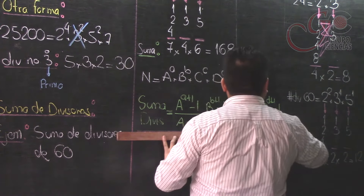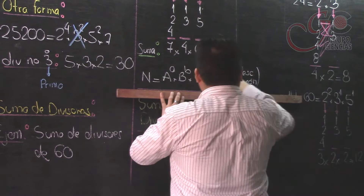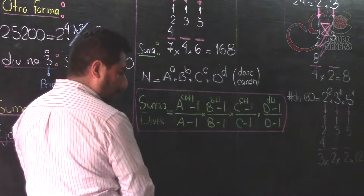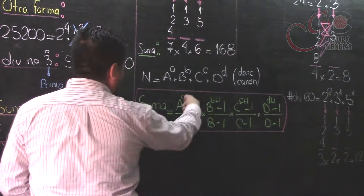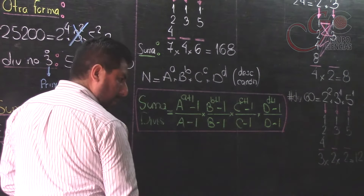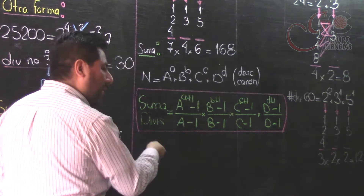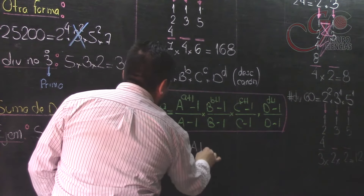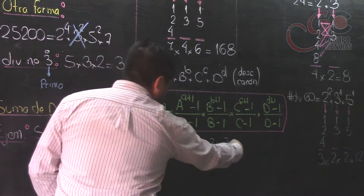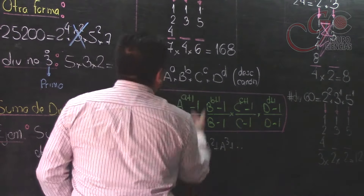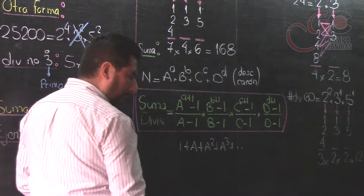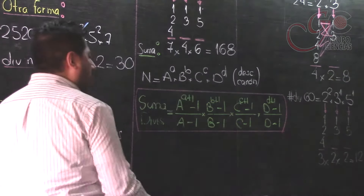Algo así: (A^(a+1) - 1)/(A-1) multiplicado por (B^(b+1) - 1)/(B-1), por (C^(c+1) - 1)/(C-1), por (D^(d+1) - 1)/(D-1). ¿Qué haremos con esos numeritos? Los vamos a multiplicar. Con eso hallaremos la suma total de divisores. Esto posee la forma de un cociente notable; su desarrollo es 1 + A + A² + A³ y así sucesivamente. O sea, estoy sumando las potencias: 2 a la 0, 2 a la 1, 2 a la 2. Cuando queramos sumar divisores, aplicaremos esta fórmula.